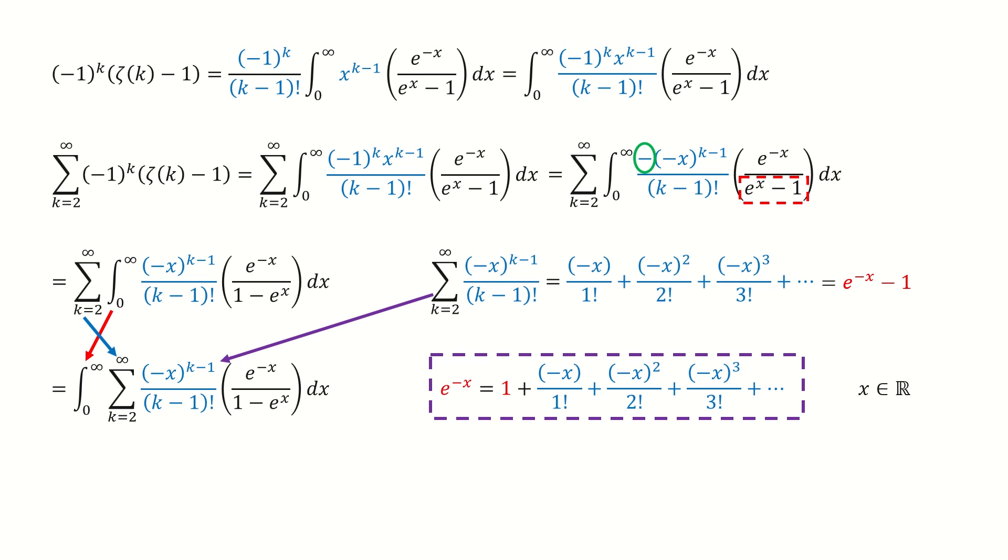Next, we plug in this function e to the negative x minus 1 to replace this series. Then we just do some algebra to simplify it. First, we multiply e to the power x on both numerator and denominator. Then for this term inside this purple box, we can distribute this e to the power x inside the parentheses.